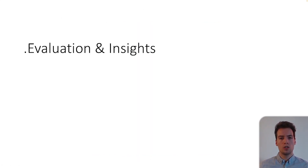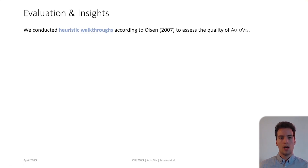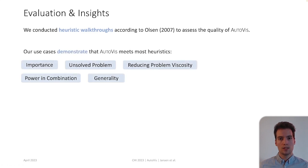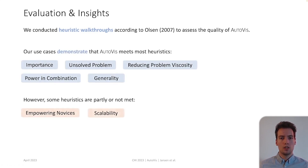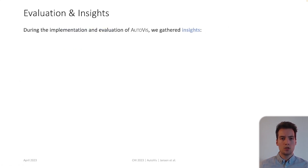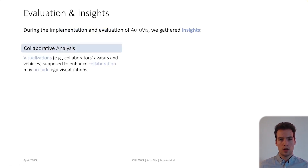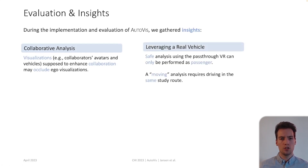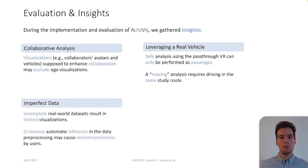To evaluate AutoViz, we conducted heuristic walkthroughs according to Olsen within these use cases. Our use cases demonstrated that AutoViz meets most heuristics. However, some heuristics are not met. AutoViz currently does not fully empower novices, as navigating an annotated dataset in VR can be overwhelming. Besides, scalability is not met yet, as visualizations may overlap with increasing dataset size and number of objects, for example in pedestrian crowds or traffic jams. The visualization supposed to enhance collaboration could occlude the visualizations of individual users. A safe analysis using the pass-through VR can only be performed as a passenger, and analysis during driving is only possible when driving the same study route. Imperfect real-world data may result in limited or missing visualizations, and automatic inferences in the preprocessing could be erroneous and cause misinterpretations by users.